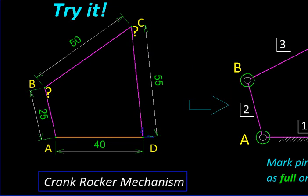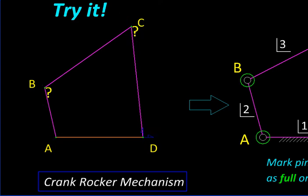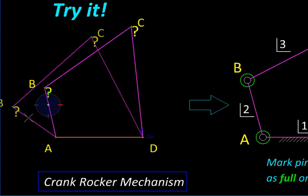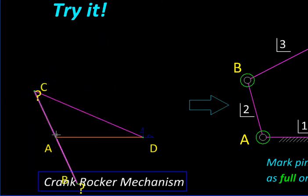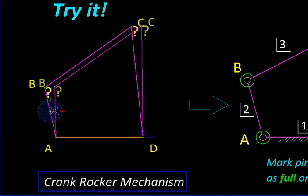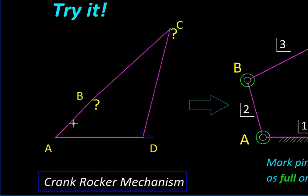So let us consider the extreme positions of this mechanism because they are going to give us the start and end angles. So I am going to drag on this crank AB and watch the rocker DC over here. As we drag, one extreme, the leftmost extreme, is reached when our crank AB is overlapping on the coupler BC. The other extreme is reached when again they become collinear, but this time instead of overlapping they are one next to the other, so their lengths are kind of getting added.